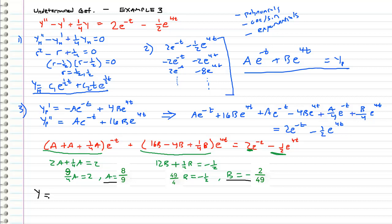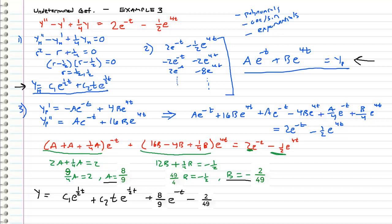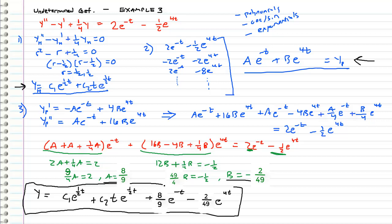Now we can put it all together for our general solution: the homogeneous solution plus the particular solution with the coefficients substituted in. So we have c1 e to the one-half t plus c2 times t e to the one-half t, plus 8 over 7 e to the negative t minus 7 over 94 e to the 4t. This is the general solution to our differential equation.